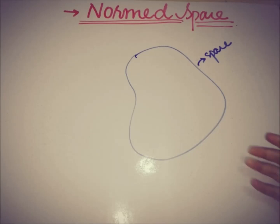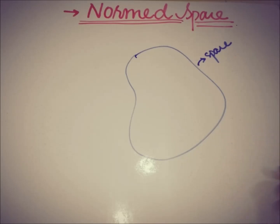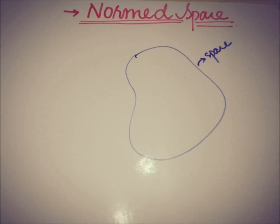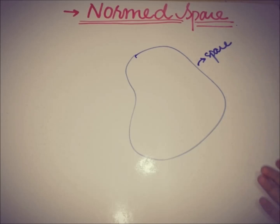Similarly, a space is said to be a topological space if it satisfies 3 axioms — the first being the existence of the empty set and the whole space, and then intersection and union. So going in the same way, if we have a space, it is said to be a normed space if it satisfies some axioms.